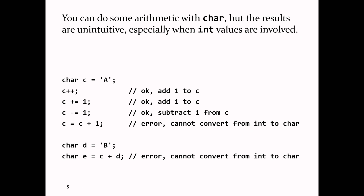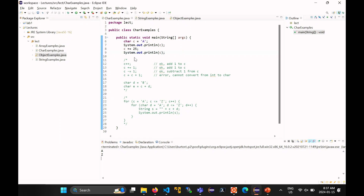You have to be very careful with char arithmetic because the rules are somewhat confusing. You can start with 'A' and use pre-increment or pre-decrement — plus-plus or minus-minus — and that adds or subtracts one from the char. You can also use plus-equals and minus-equals, which all work as expected. However, writing c = c + 1 doesn't work — that causes an error.